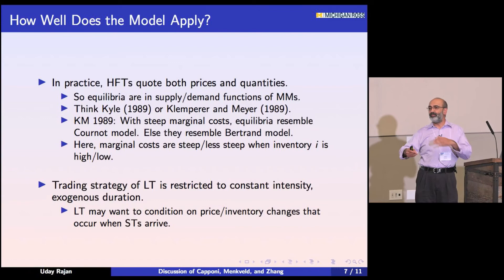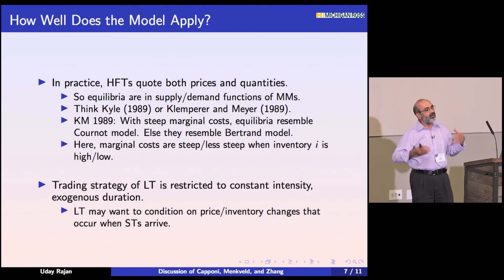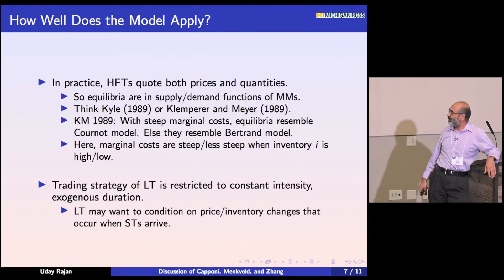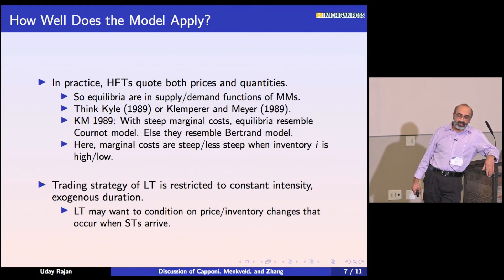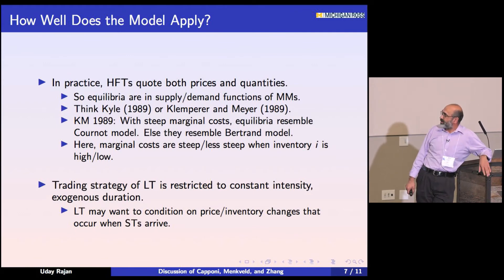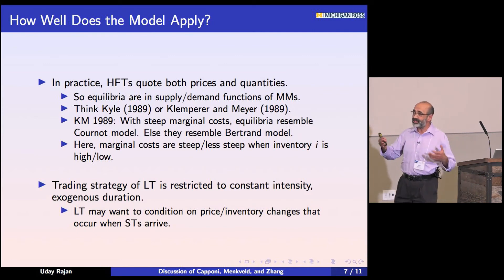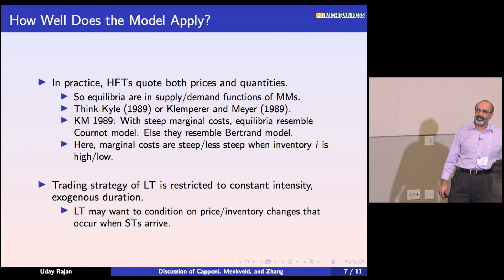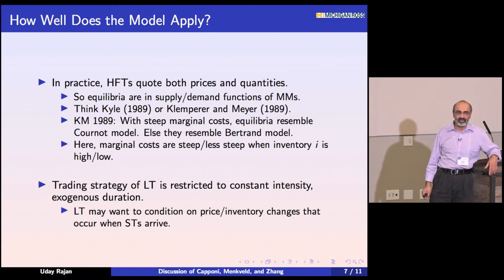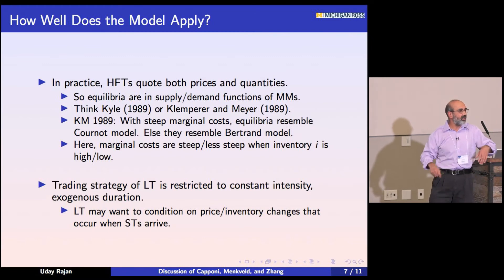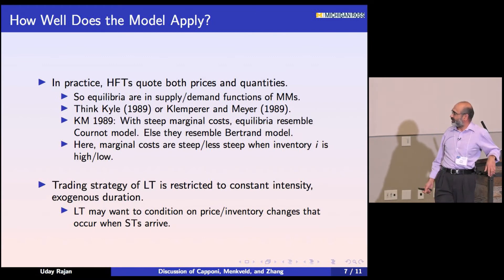Think of Klemperer and Mayer 1989. Klemperer and Mayer tell us that when marginal costs are steep, the equilibrium looks like the Cournot model, and when marginal costs are flat, they look like the Bertrand model. In this model, marginal costs are steep when inventory is high and flat when inventory is low, which seems to say that maybe sometimes they look like the Cournot model and sometimes the Bertrand model — not exactly regime shifting, but something along those lines.